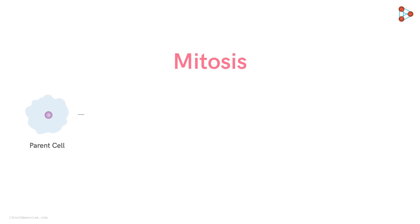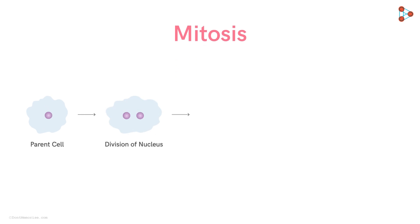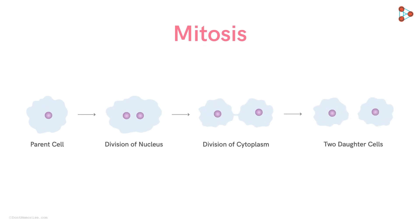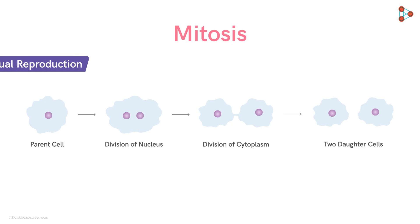By this process of cell division, lower organisms like prokaryotes and a few unicellular eukaryotes produce new individuals of their kind. This is also called asexual reproduction. So mitosis helps in carrying out asexual reproduction in lower organisms.